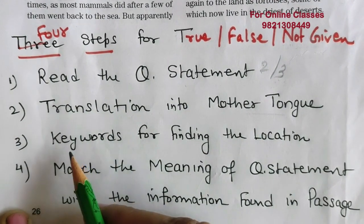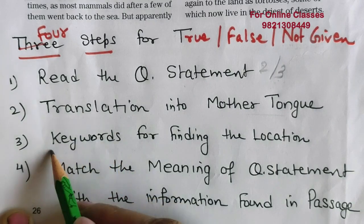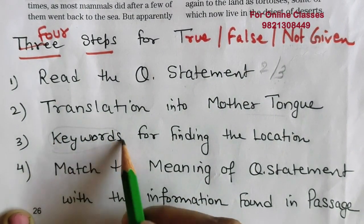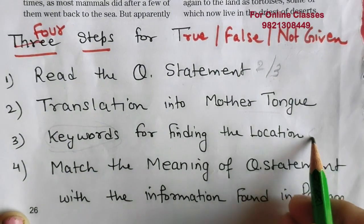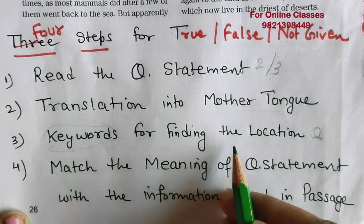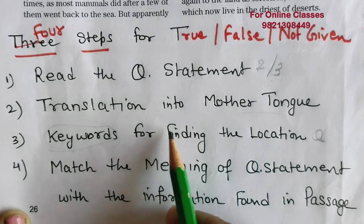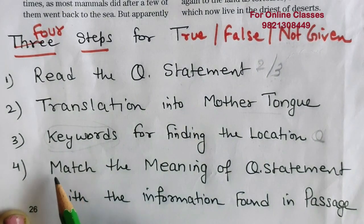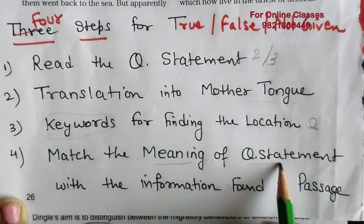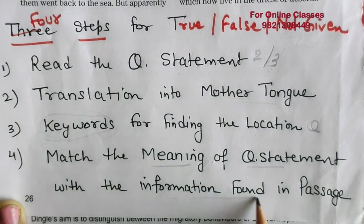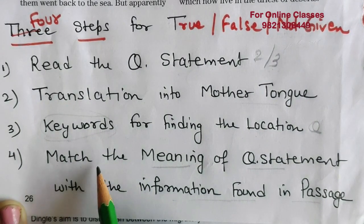The third step is keywords for finding the location — circle the keywords for finding the location of the question statement in the reading passage. Fourth, after you have found the location, always match the meaning of the question statement with the information found in the passage.